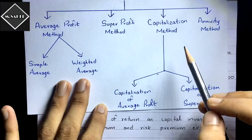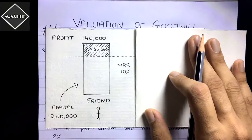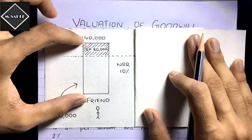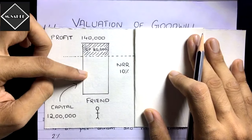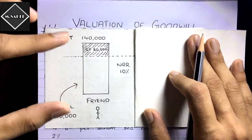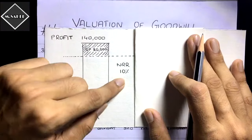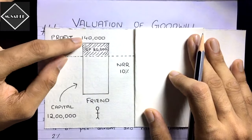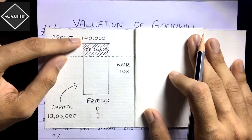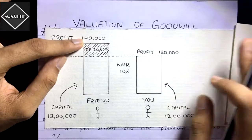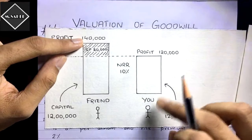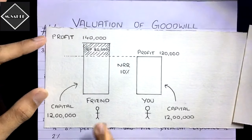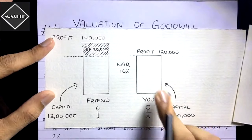To understand the capitalization method, let's take an example. Let's say your friend has a business and has invested 12 lakh capital into it. The normal rate of return of this industry is 10 percent. Your friend is earning a profit of one lakh forty thousand. You decide to open the same type of business in the same industry and also invest 12 lakh capital.